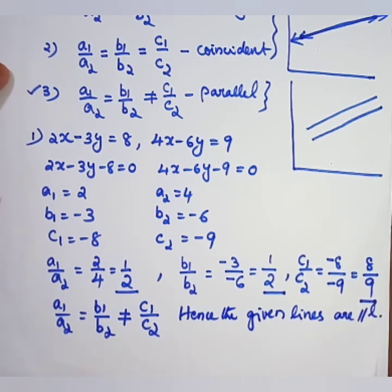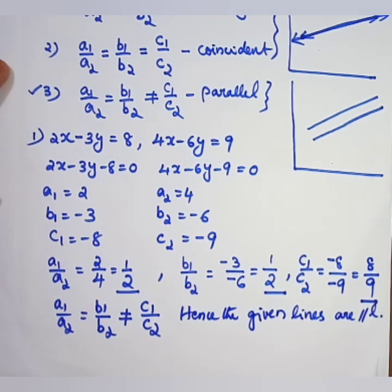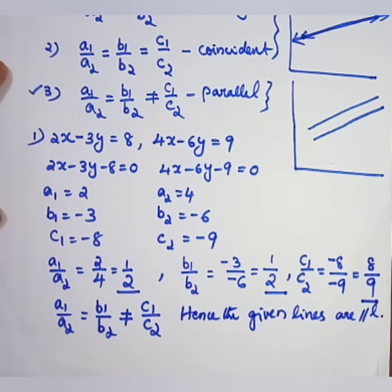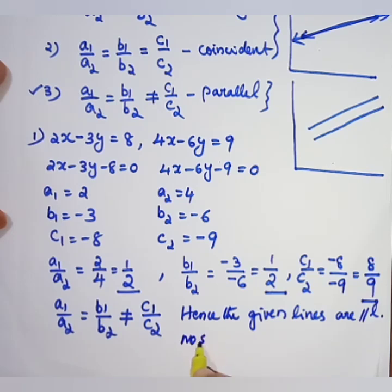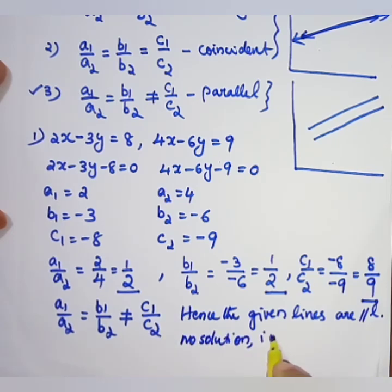So the given pair of linear equations has no solution and therefore it is inconsistent. No solution — therefore inconsistent.